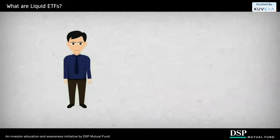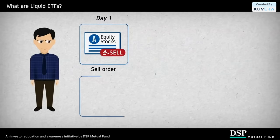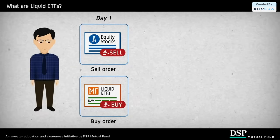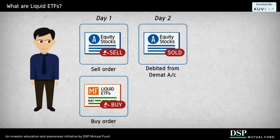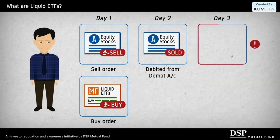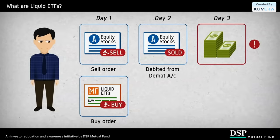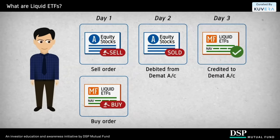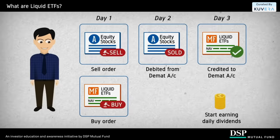This is how it all works. When you place your sell order on day one, you can simultaneously buy liquid ETF units on the same day. On day two, your stocks are debited from your DMAT account. And on day three, instead of the sale proceeds from the stock being credited to your trading account, the liquid ETFs will be credited to your DMAT account, and you can start earning returns in the form of daily dividends.